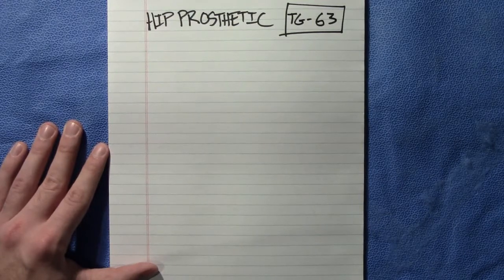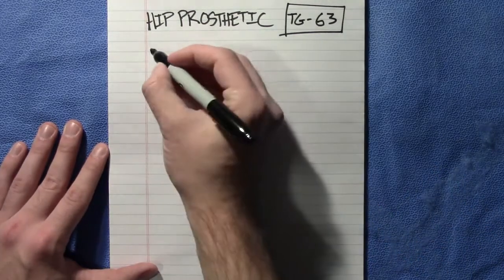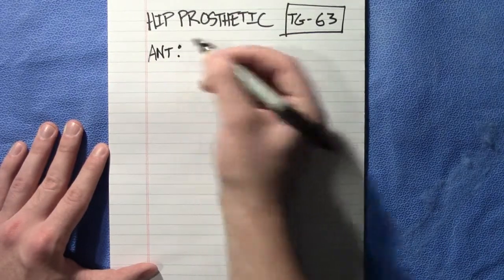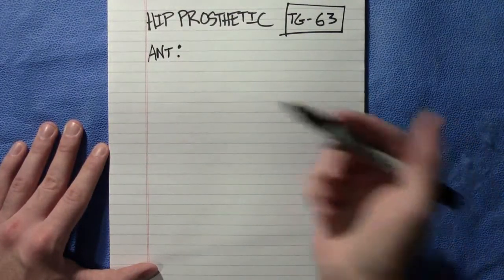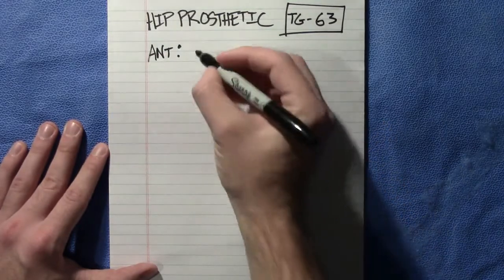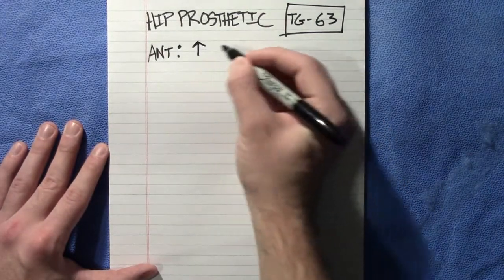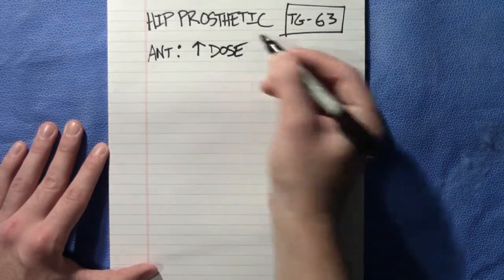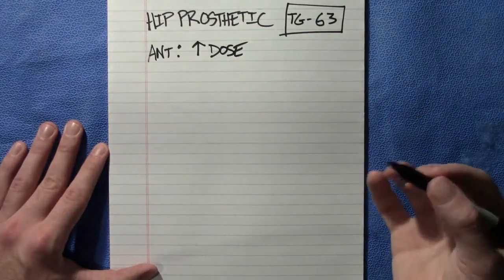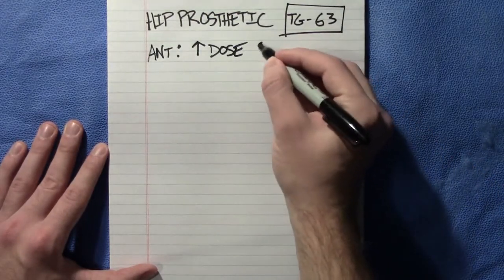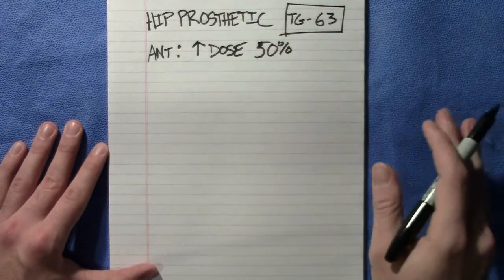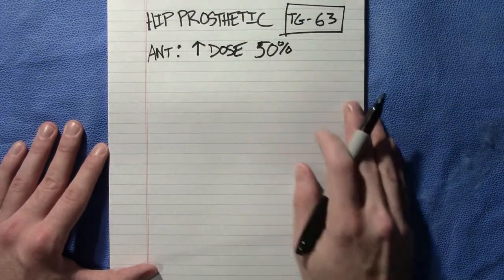To begin, let's talk about the anterior portion of the surface where the beam is coming through. There is a sharp increase in dose at that anterior surface — the dose increase could be up to 50%. It's not always 50%, but it could be for all energies across the board, so it is certainly something to keep in mind.